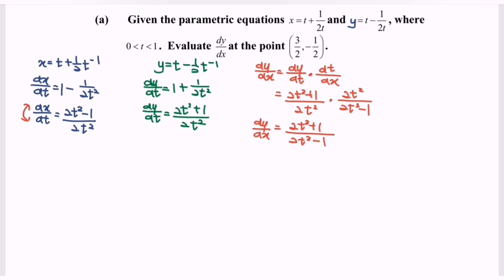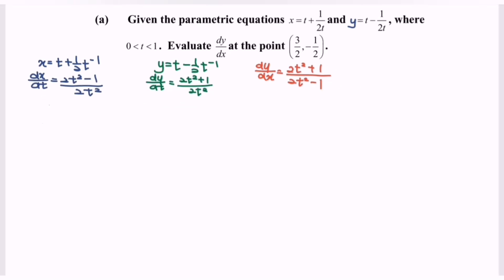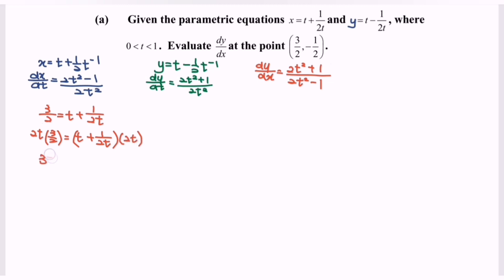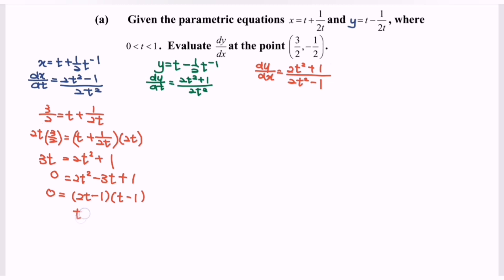Next, find the value of t using the point x equals 3 over 2. Substitute 3 over 2 into x: 3 over 2 equals t plus 1 over 2t. Multiplying all terms by 2t gives 3t equals 2t squared plus 1, which rearranges to 2t squared minus 3t plus 1 equals 0. Factorizing: (2t minus 1)(t minus 1) equals 0, so t equals 1 over 2 or t equals 1.